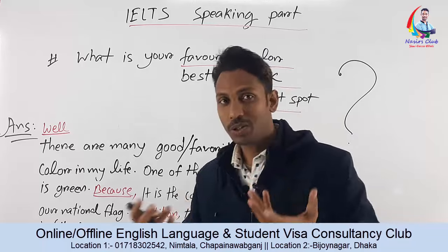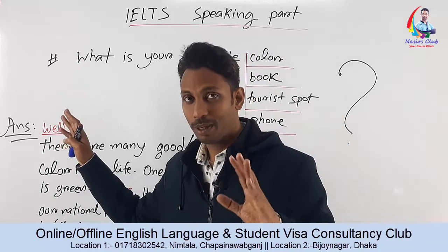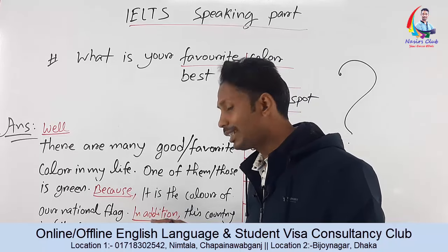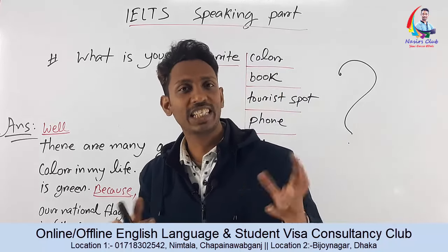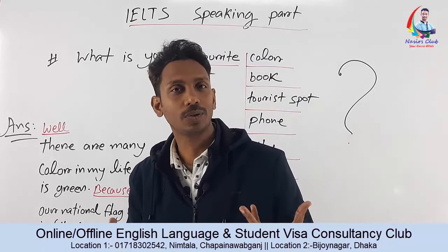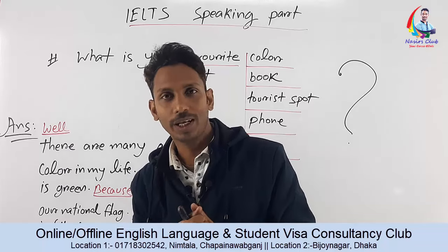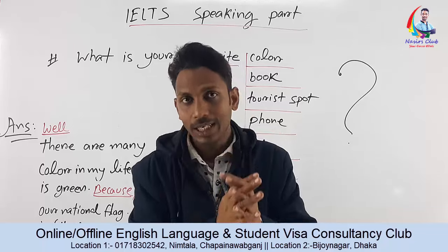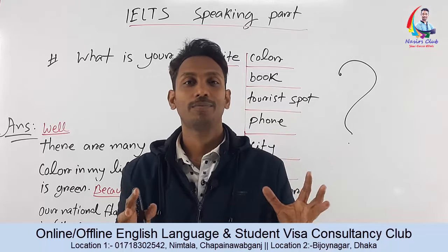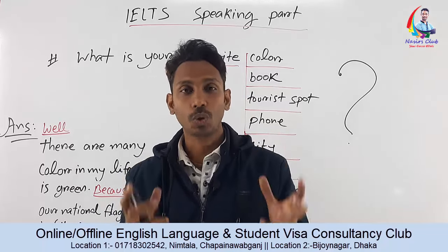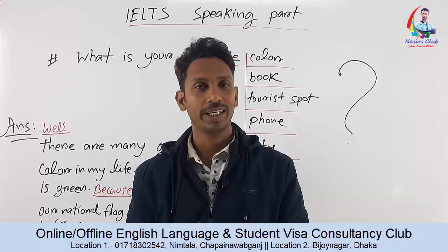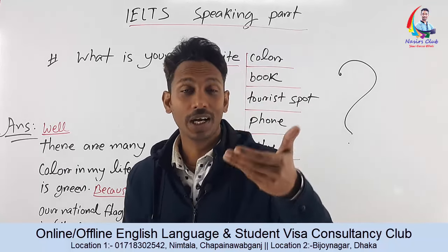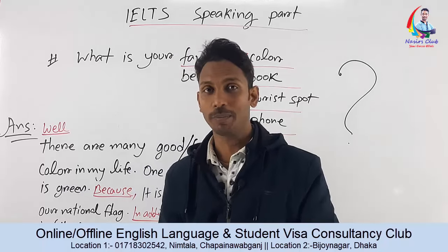We need to start our answer using the word 'Well' as a discourse marker. We also have to use additional connectors. If you give additional information and elaborate on your answer, then achieving a score of 7.5 or 8 becomes possible.